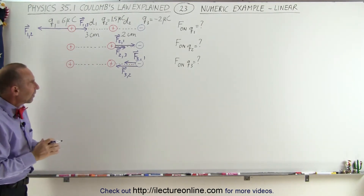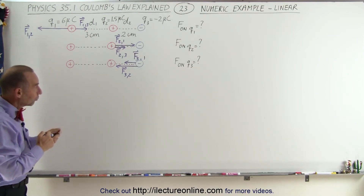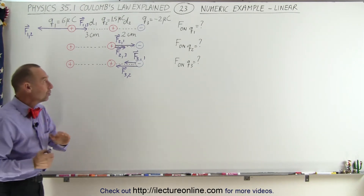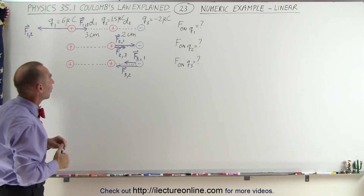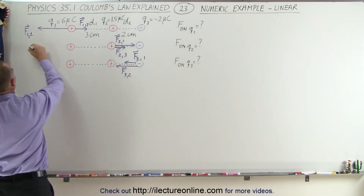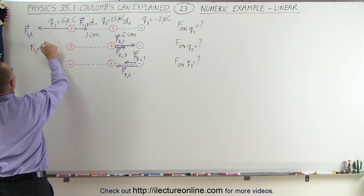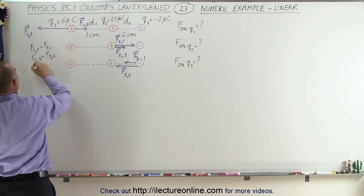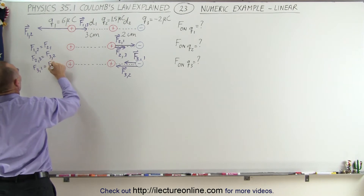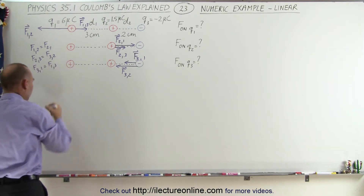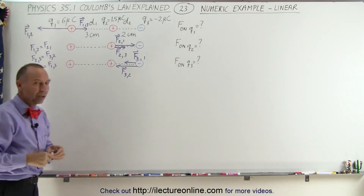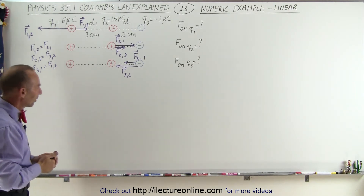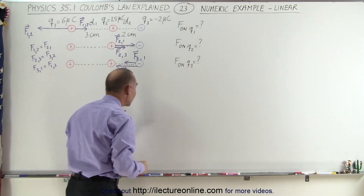Now we're ready to find the results. We're going to find the magnitude of each of these forces one at a time. Notice that the force F12 is equal to F21, the force F23 is equal to F32, and the force F31 is equal to F13. So it doesn't matter which order we put these subscripts — the magnitude will always be the same.